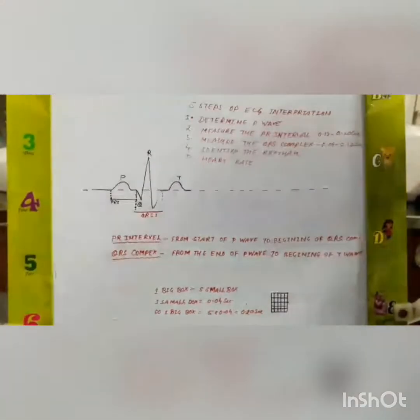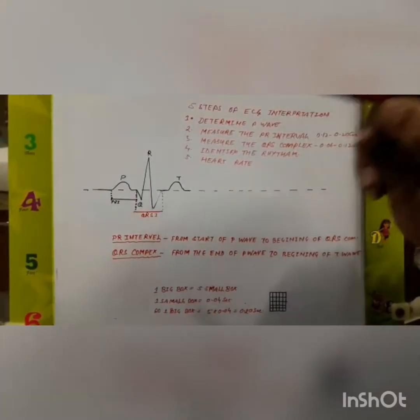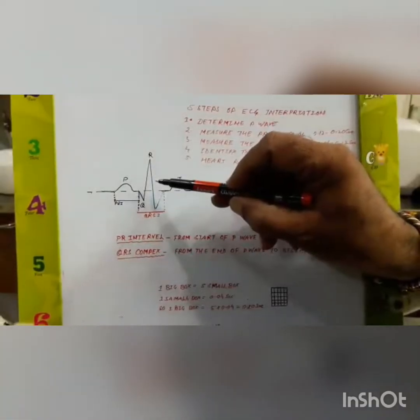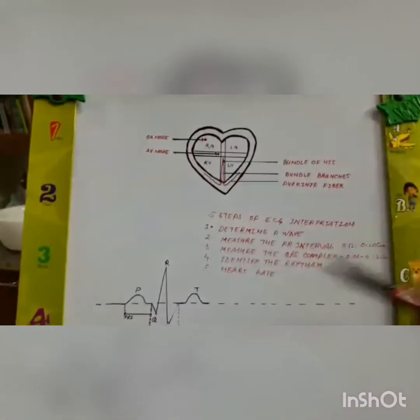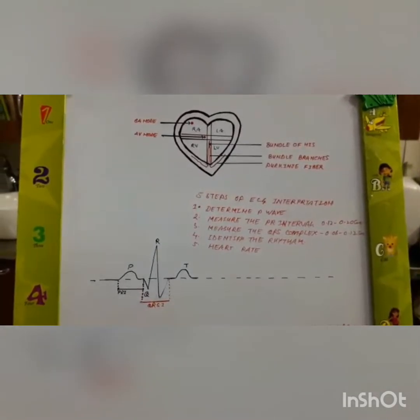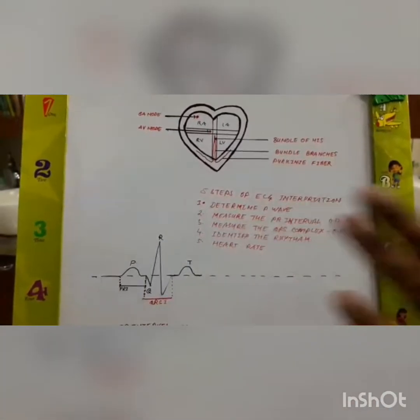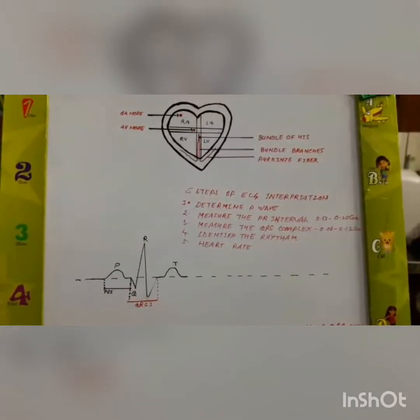Step three: the QRS interval. The QRS interval starts from the end of the P wave to the beginning of the T wave. This interval should not be more than 0.06 to 0.12 seconds. If it is more than 0.12 seconds, it shows some cardiac block — there must be some AV block.